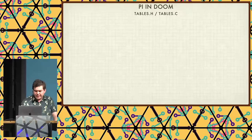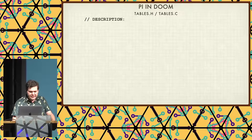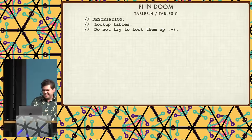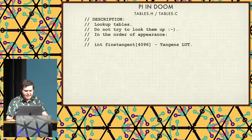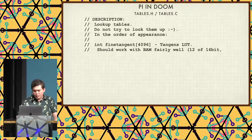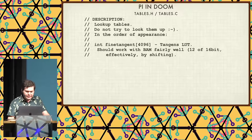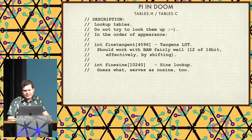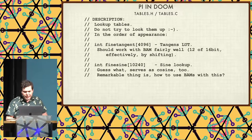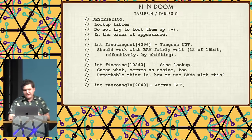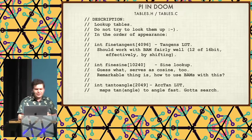Where does pi come up in Doom? Well, there are some lookup tables in the original source. There's one lookup table for tangents. There is a binary representation of angles — they're doing some bit shifts. Everything is memory constrained, it's 1993. Sine lookups — and it serves as cosine too, because you can just shift it. There's an unanswered comment in the code — I guess some things don't change since 1993. And then arctan lookup table, which maps the tan of the angle to the angle fast.